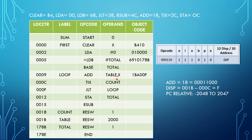Next we have ADDF table,X. It is a Type 3 instruction format. For the opcode, we take ADD's mnemonic value 18 (most significant bits). For NIXBPE, it is index addressing mode due to the comma X, and for index addressing mode the N and I values are also set to 1. To determine base relative or PC relative, we compute the displacement: value of TABLE is 001B and the program counter is 000C, giving displacement 00F. E is 0 because it is Type 3. The object code is 1BA00F.